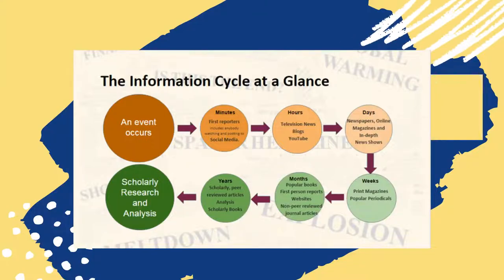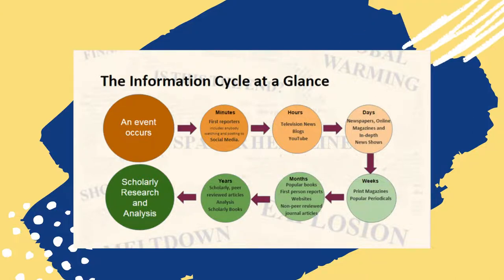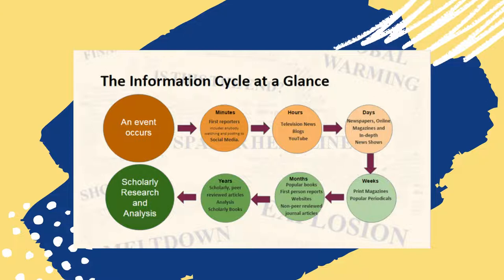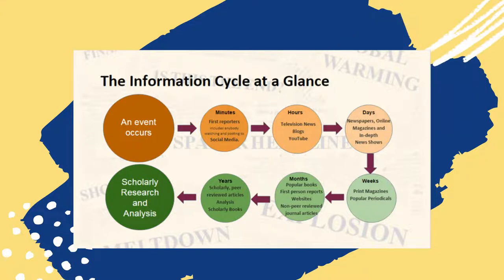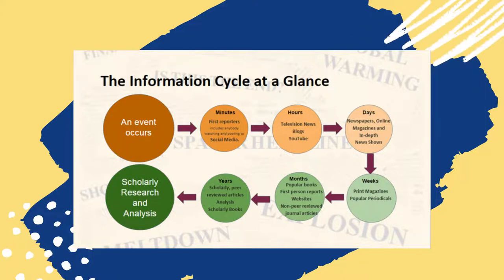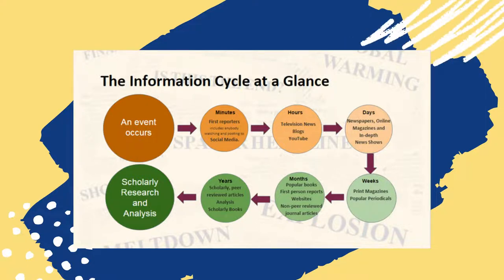The information cycle refers to the way that information is produced and distributed and how it changes over time. Understanding how the information cycle works will help you to know what kinds of information may be available on your topic as you locate and evaluate research sources for your essay.